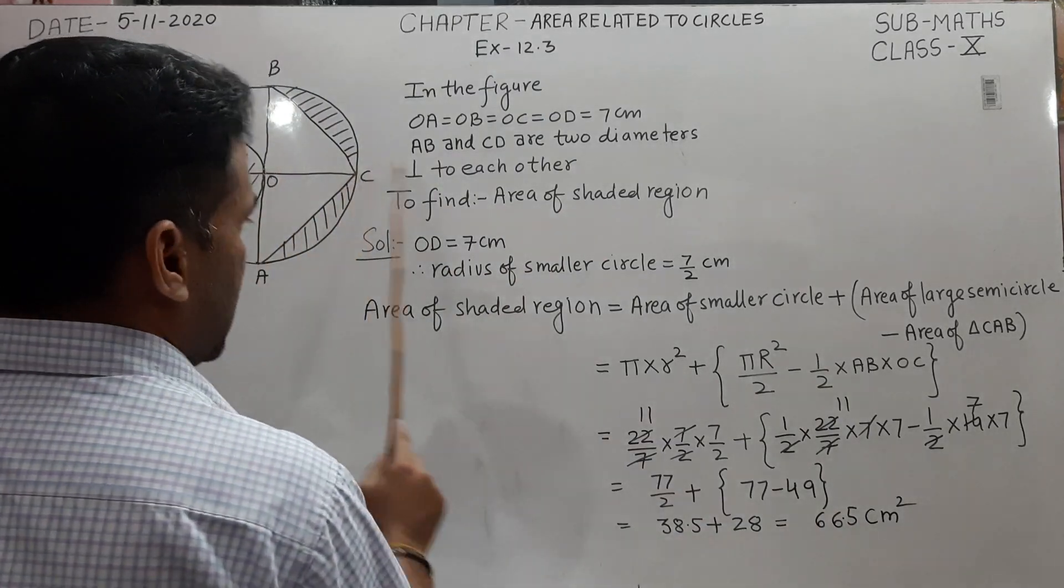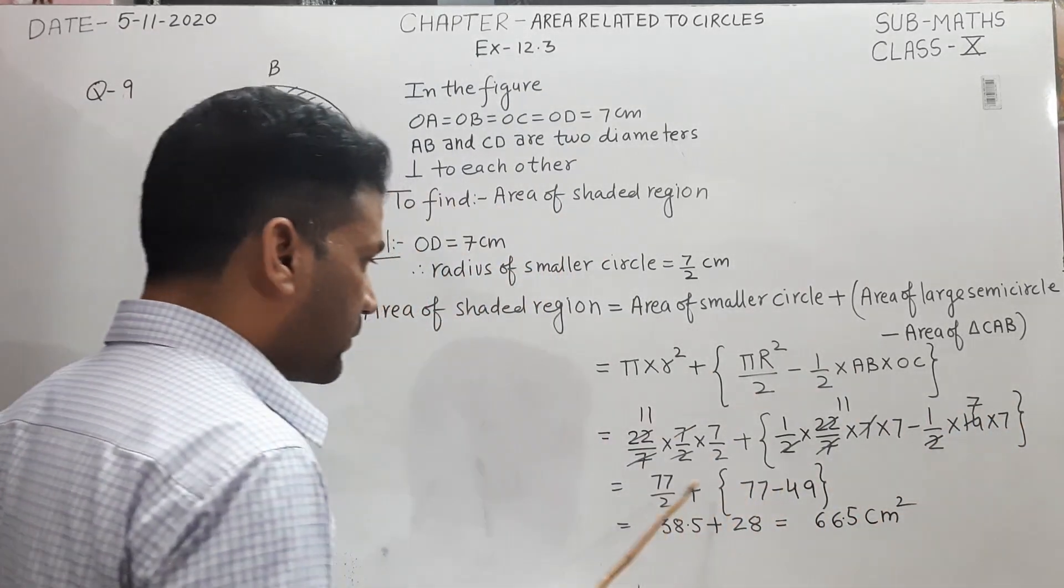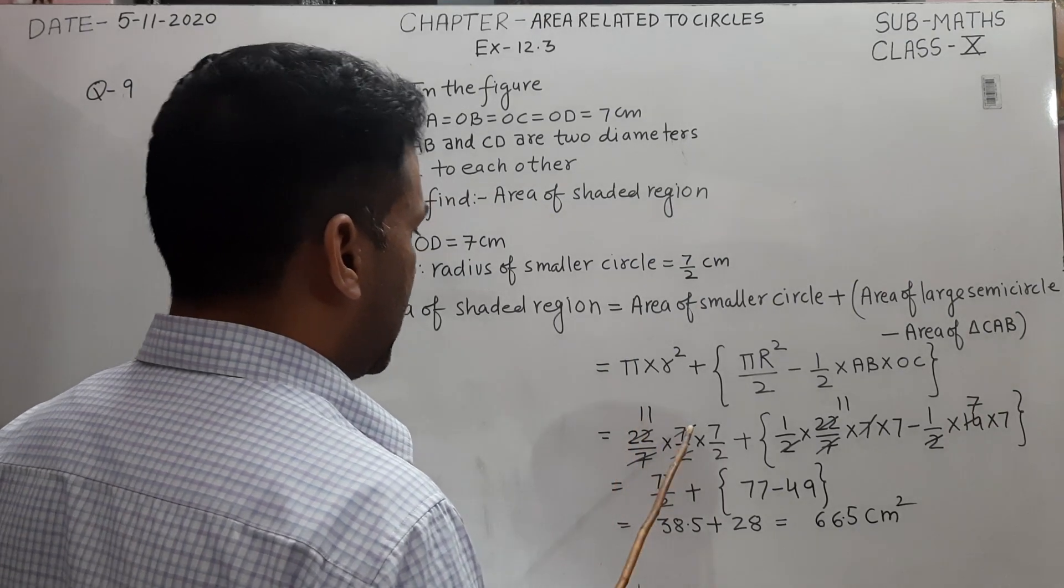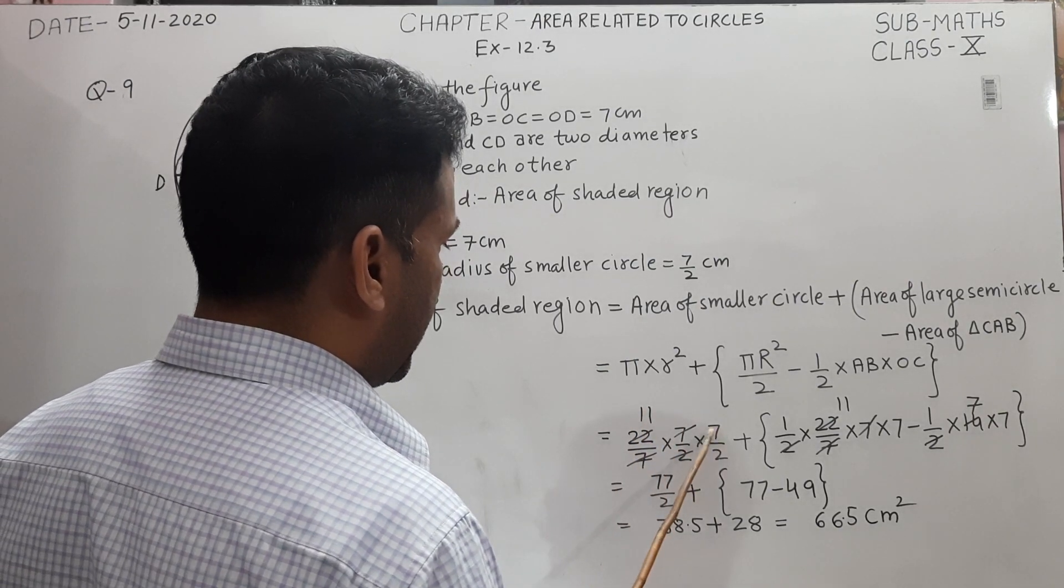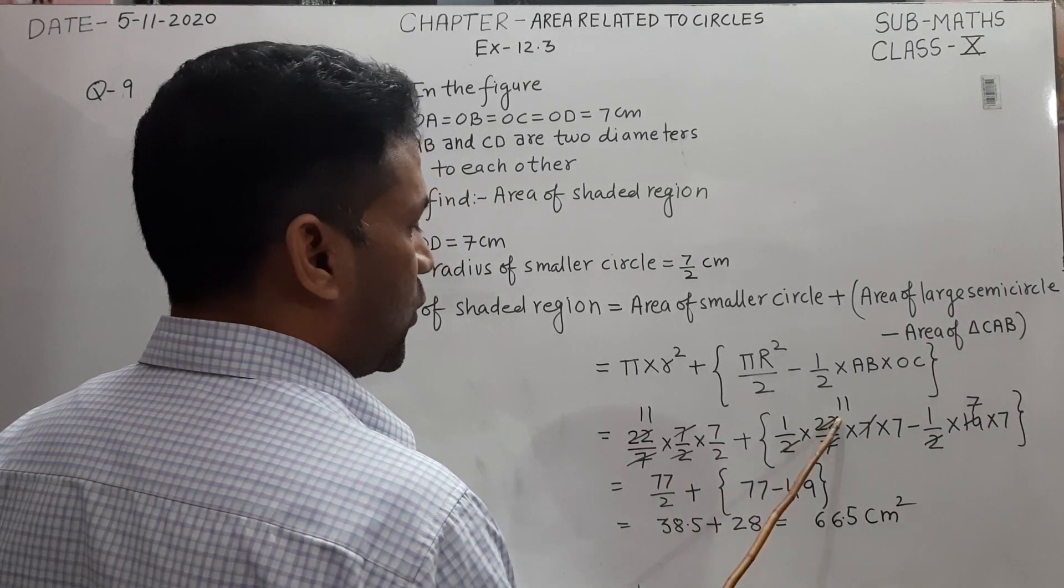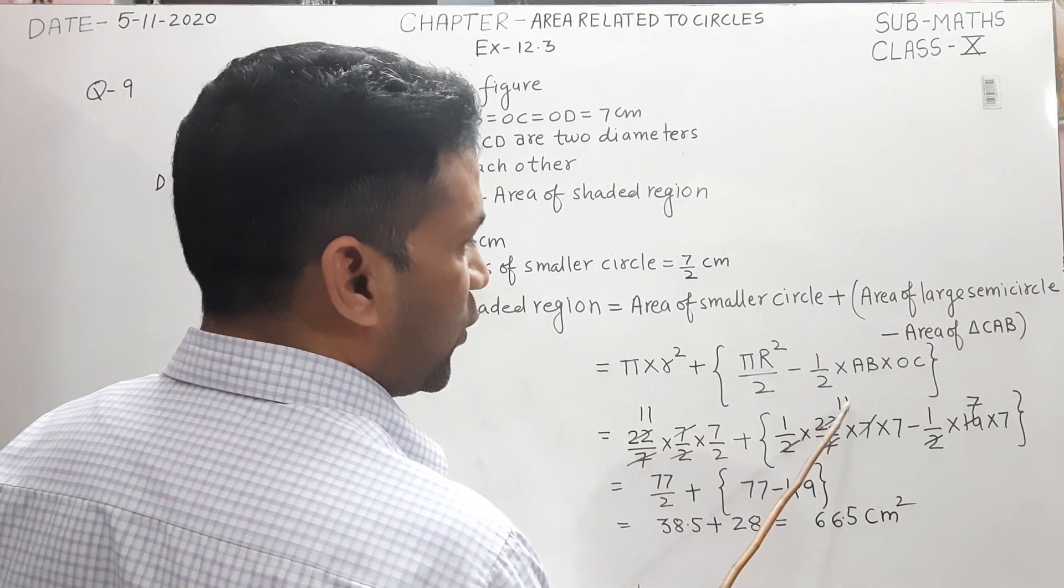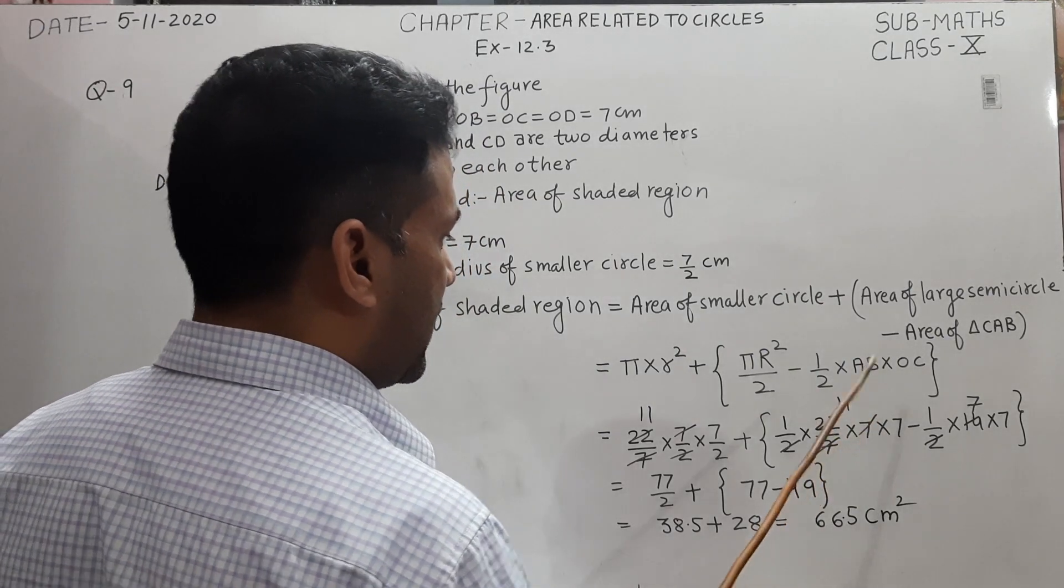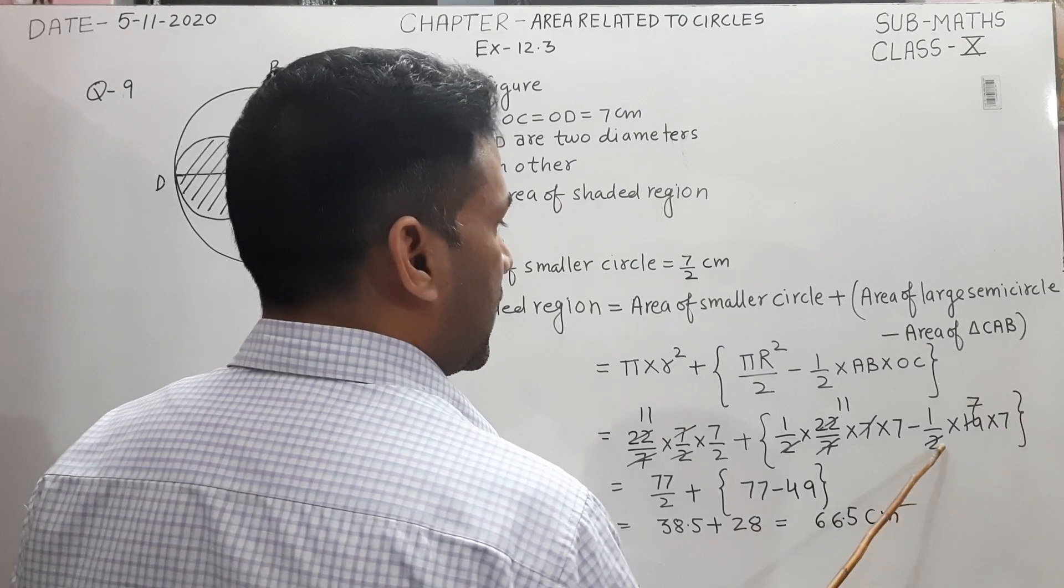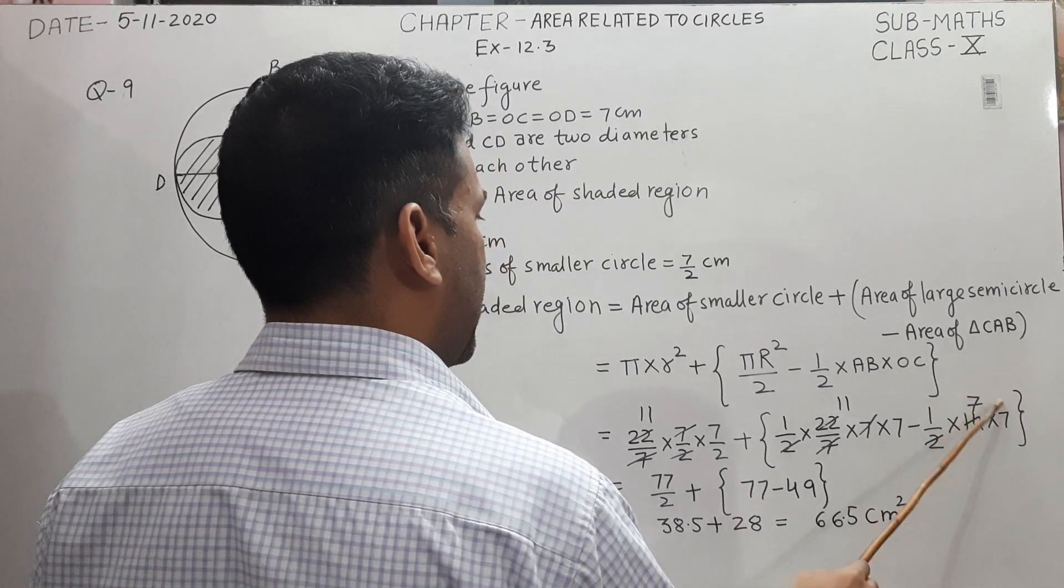Simplifying: 7 cancels with 7, 2 reduces 22 to 11, so 11 × 7 = 77/2 = 38.5. Similarly, 2 reduces 22 to 11, 7 cancels with 7, giving 11 × 7 = 77. Then 2 cancels 14, and we get 7 × 7 = 49.